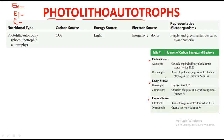According to the energy source, microorganisms are divided into two parts: the first one is the phototroph and the second one is the chemotroph. We will discuss the phototroph. 'Photo' means light, so these microorganisms get their energy from sunlight. That is why these are known as 'photo.' So 'photo' means they are getting their energy from sunlight.